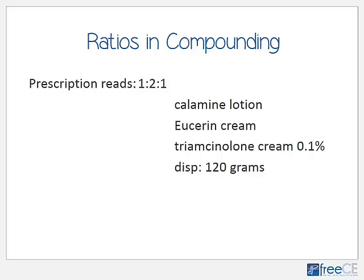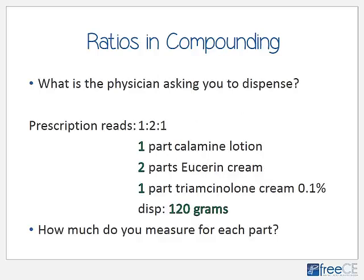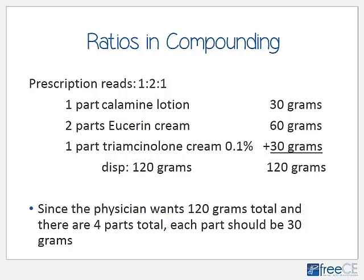Here's an example: a prescription reads 1:2:1, calamine lotion, Eucerin cream, triamcinolone cream 0.1% — dispense 120 grams. The physician is telling us exactly how many parts of each ingredient to use. We want 1 part calamine lotion, 2 parts Eucerin cream, and 1 part triamcinolone cream, for a total of 120 grams. Adding up the parts: 1 + 2 + 1 = 4 total parts.